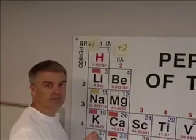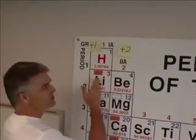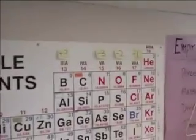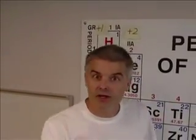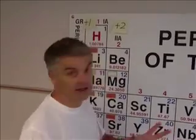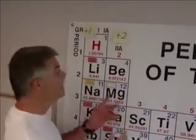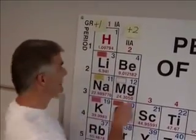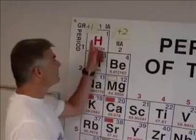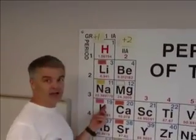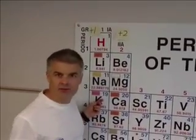Plus one, plus two, plus three, minus three, minus two, minus one. Here's what I want you to do. Everybody, get out your periodic table. Push pause. You're back — great. You've got your periodic table. I want you to put at the top of your column, like I have here in class, plus one for the first column on the periodic table.